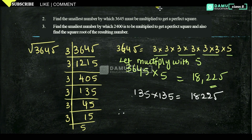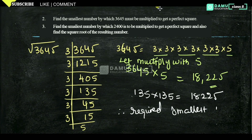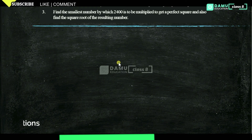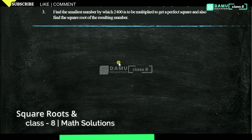Therefore, the required smallest number is 5, to multiply 3,645 in order to make it a perfect square number. In this module, we are going to discuss the third question: Find the smallest number by which 2,400 must be multiplied to get a perfect square, and also find the square root of the resulting number.